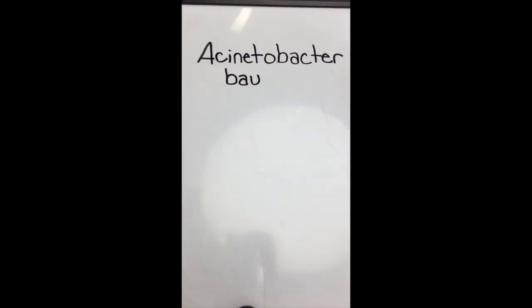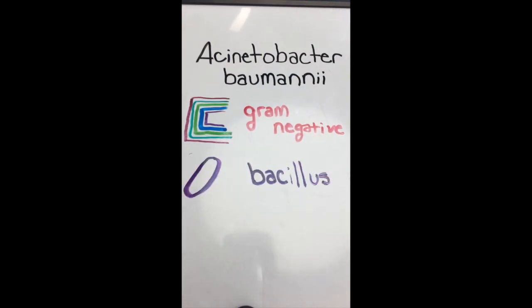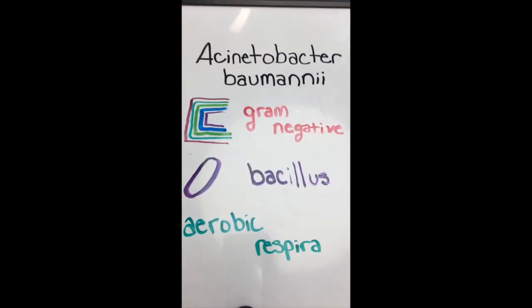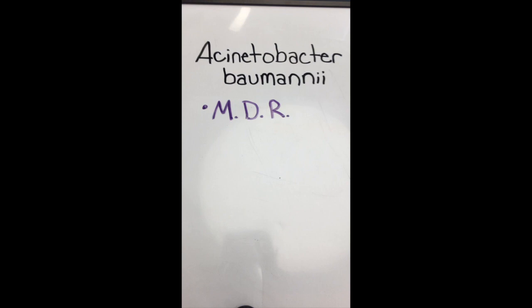Acinetobacter baumannii is a gram-negative superbug, has a bacillus shape, and performs anaerobic respiration. It is considered to be one of the most common and serious multidrug-resistant pathogens, meaning it has an extensive antibiotic-resistant spectrum.